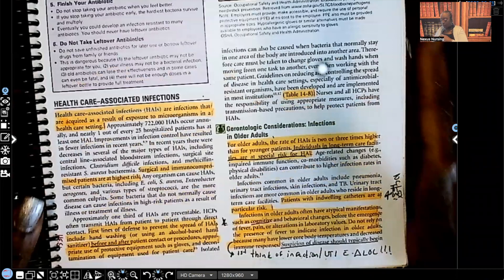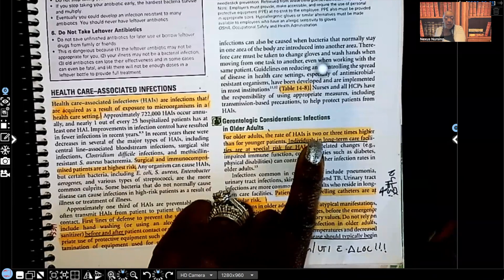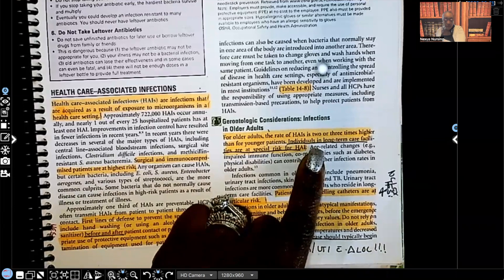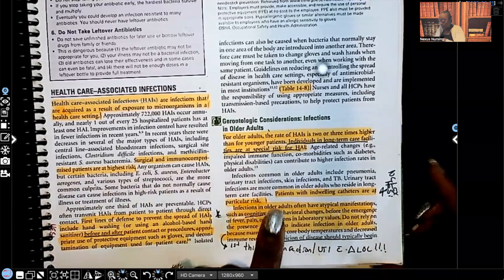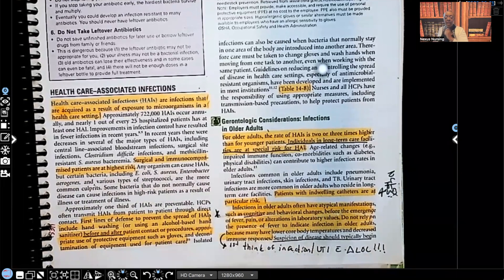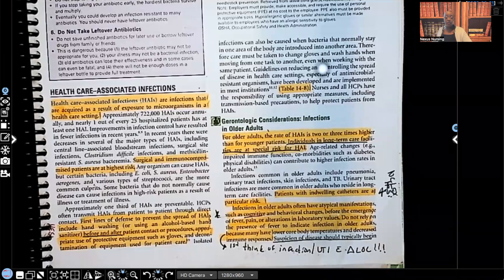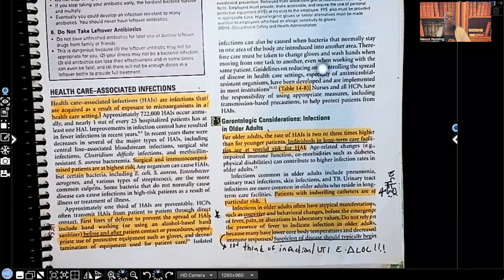Look at gerontological considerations. For older adults, the rate of HAIs is two to three times higher than that for younger patients. Individuals in long-term care facilities are at special risk for these type of infections. Very important to know. Patients with indwelling catheters are at especially high risk. NCLEX asks about that. They expect you to know that. And I want you to think about it. An indwelling catheter, that's something being introduced into the body, right? Is that going to be a high risk for that patient to get infection, such as a bladder infection? Yes. And that's why when it comes to indwelling catheters, number one, we do not introduce an indwelling catheter into a patient unless it's absolutely necessary. We've exhausted all other options, right? And the minute that it's possible to take out that indwelling catheter with that patient being stable, we're going to take it out because we know the risk is so high of having an infection with an indwelling catheter. You need to know that.